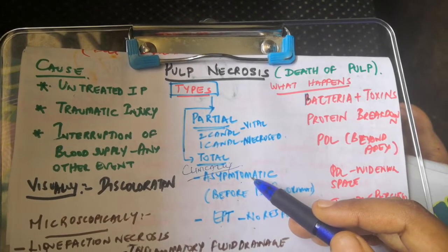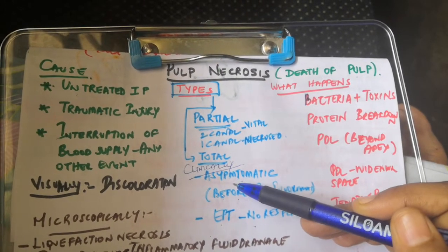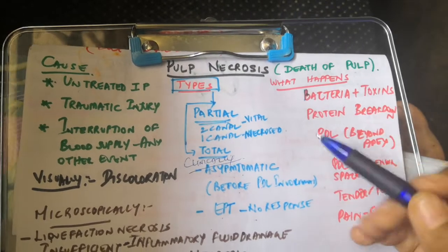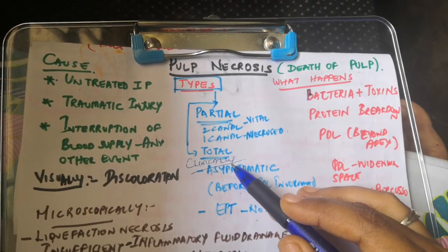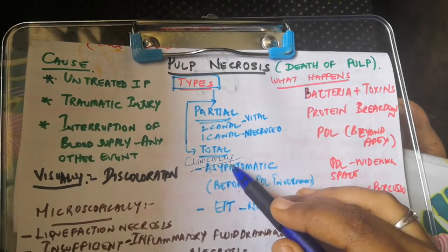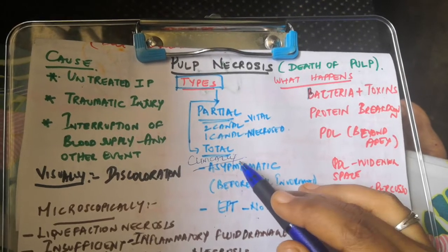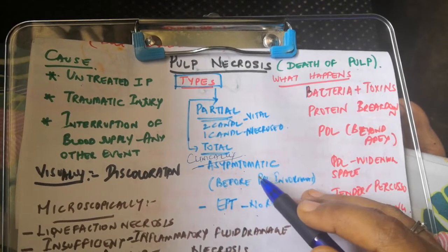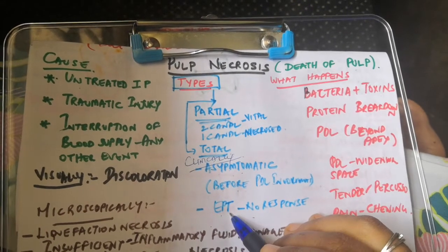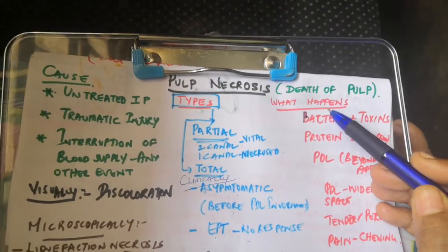Clinically, pulpal necrosis is typically asymptomatic. For example, electric pulp testing will not elicit a response because all the canals have become necrotic. It remains asymptomatic unless and until PDL involvement occurs. However, as soon as pulpal necrosis leads to PDL involvement, the patient experiences pain, and there will be no response in the case of total necrosis of the pulp.